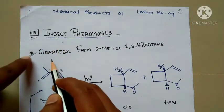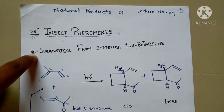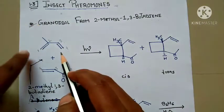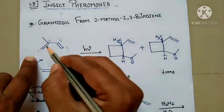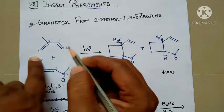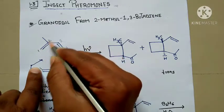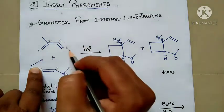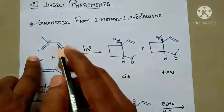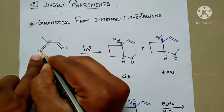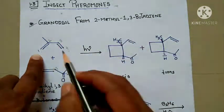In this section we have to see the first synthesis — that is grandisol from 2-methyl-1,3-butadiene. The main reactant molecule is 2-methyl-1,3-butadiene. We give the number of the longest continuous chain: first, second, third, fourth carbon. I am going left to right because the second position has a substituent and the nearest double bond is at position one. So the name of this reactant is 2-methyl-1,3-butadiene.